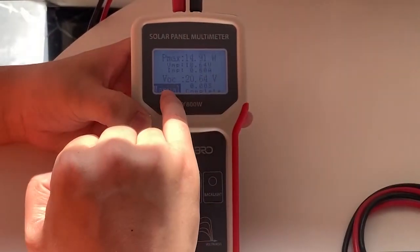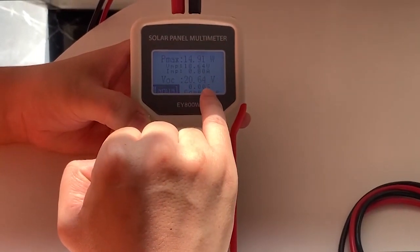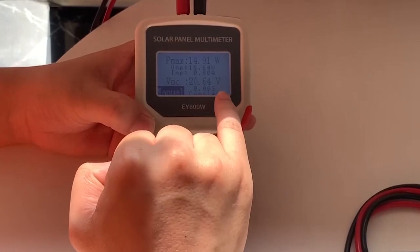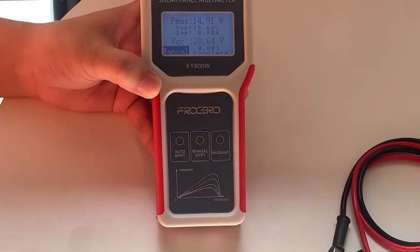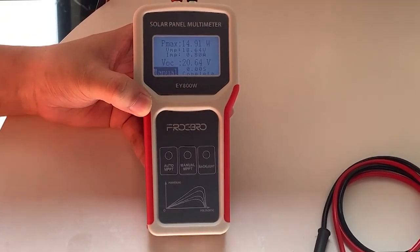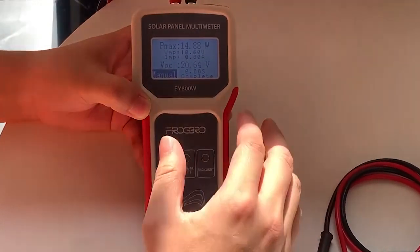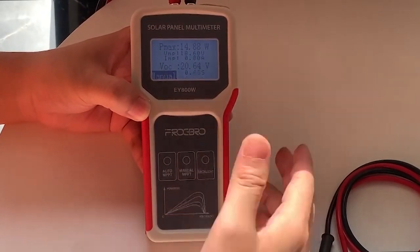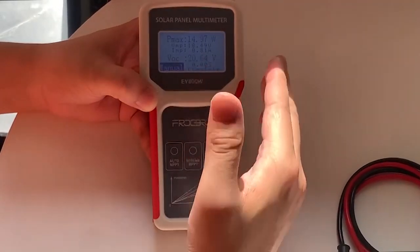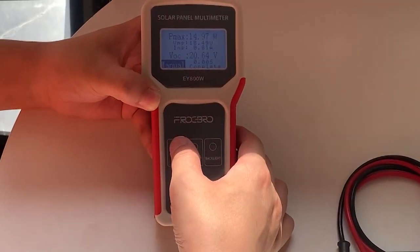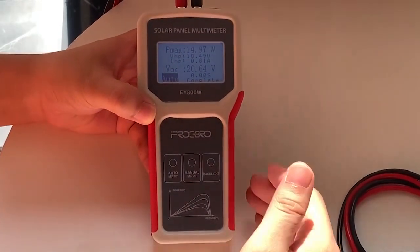And the open circuit voltage is 20.65 volts. Okay, this tester has two different modes. This is manual mode - you need to press the manual button to refresh the data, then you'll get the real-time data. And this is auto mode. You press here, and this tester will be on auto mode. It means it will refresh the data automatically.